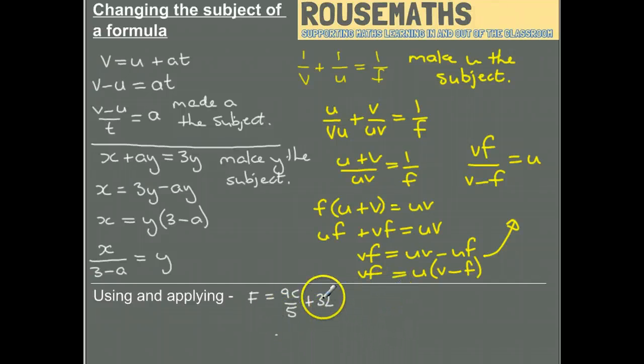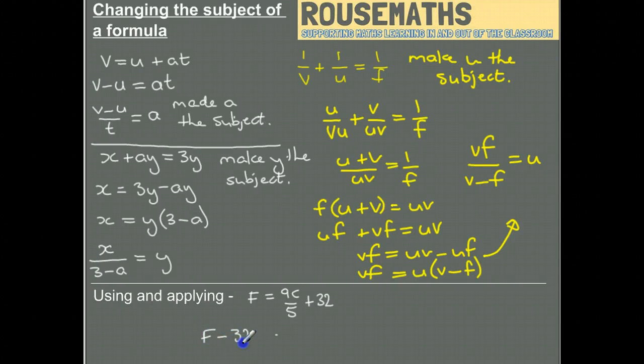So the first thing I do is take away 32 from both sides. Then I'm going to need to multiply both sides by five.